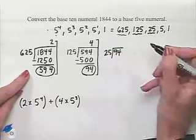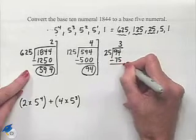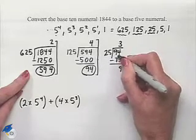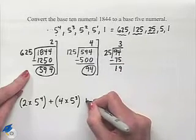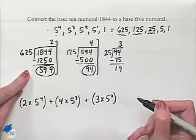We divide 94 by 25. That's going to go 3 times, 75 is our result. 5 from 14 is 9, 7 from 8 is 1. So this tells us that we're going to end up having 3 times 5 squared as part of our expansion.